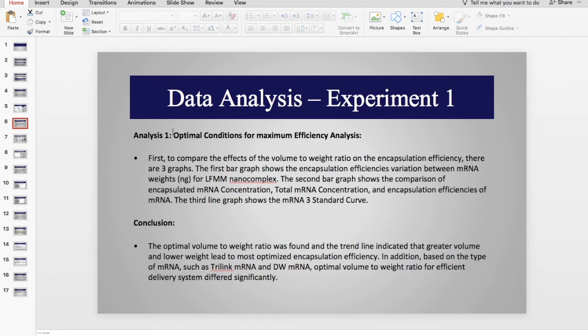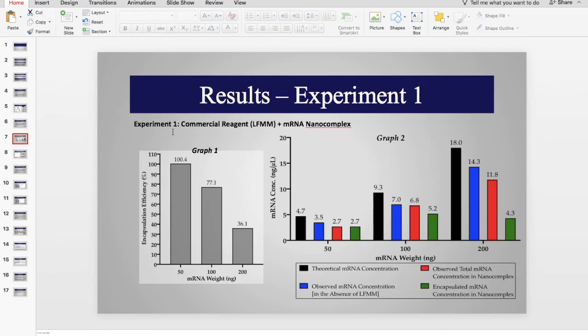So now that we've gone over our basic methodology, we're going to go to our results. For our first result, we looked at the success of different volume to weight ratios. And we saw that specifically in an LFM vector, a 50 nanogram to 50 microliter ratio was deemed as optimal and actually significantly improved the encapsulation efficiency.